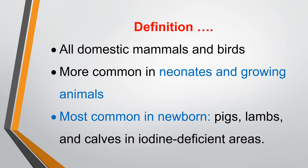Goiter occurs in all domestic animals and birds. It is more common in neonates and growing animals — most common in newborn animals, piglets, lambs, kids, and calves. It is endemic or more common in iodine-deficient areas, and the most common cause of goiter is iodine deficiency.